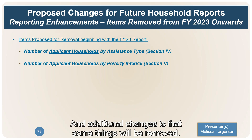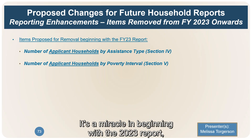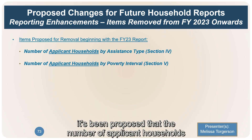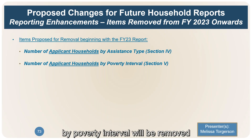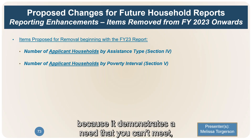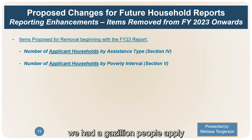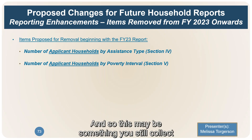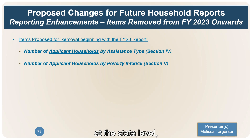Some things are also being removed. Beginning with the 2023 report, it's been proposed that the number of applicant households by assistance type and applicant households by poverty interval will be removed from the federal household report. Some states like to collect this data because it demonstrates unmet need, and you may still collect it at the state level — but at the federal level, you won't be required to report it anymore.